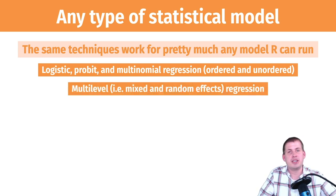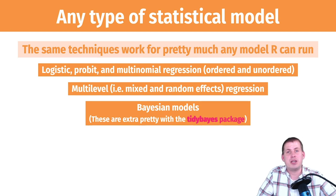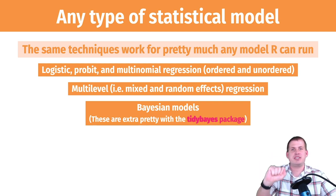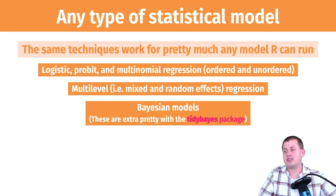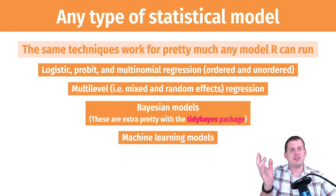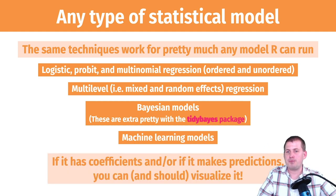You can do multilevel modeling with fixed and random effects and make the same plots. You can do cool plots with Bayesian models because those also have coefficients and distributions associated with each coefficient — so you can get mini density plots for each coefficient instead of just geom_pointrange. There's a whole package called tidybayes that provides new geoms for ggplot for Bayesian visualization. Even machine learning models like random forests and neural networks — you can plot their predictions and marginal effects, and coefficients if they provide them.